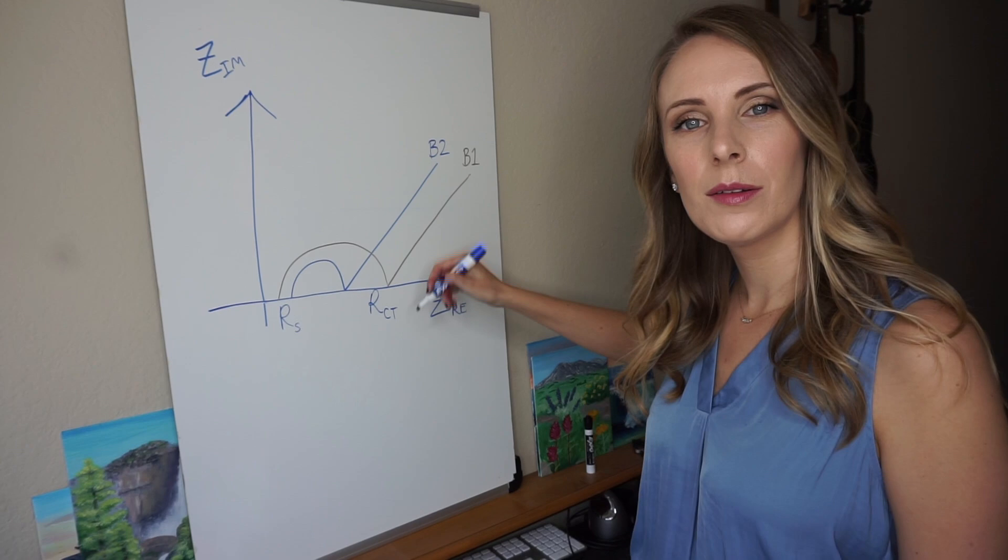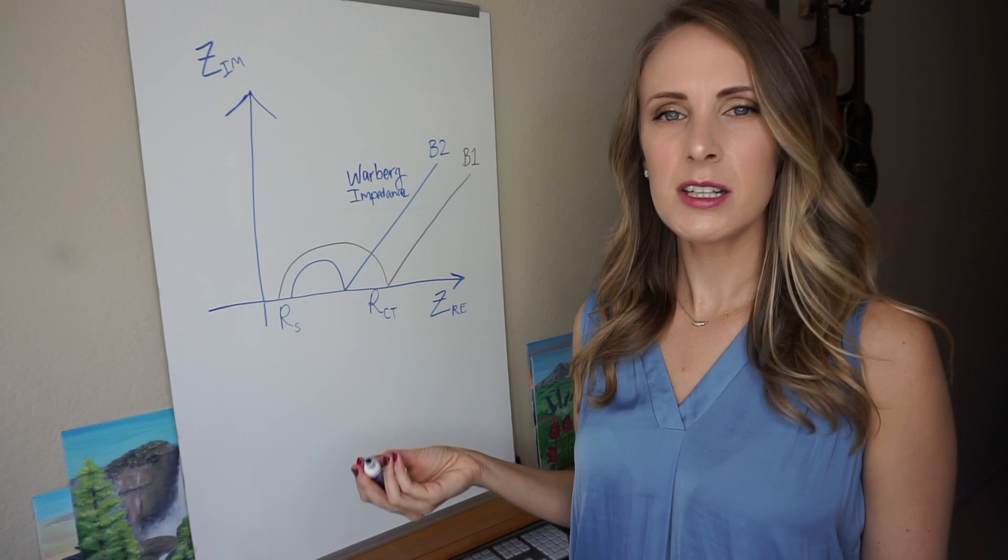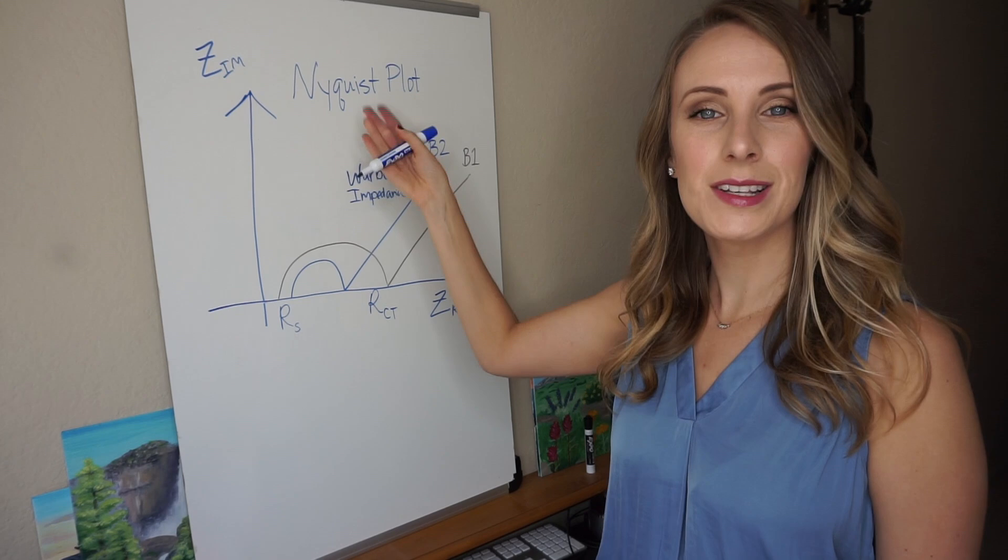And then this trailing off, this is often called the Warburg impedance. And I just realized I should probably spell out Nyquist for you. I probably should have done this at the very beginning, so this is a Nyquist plot.